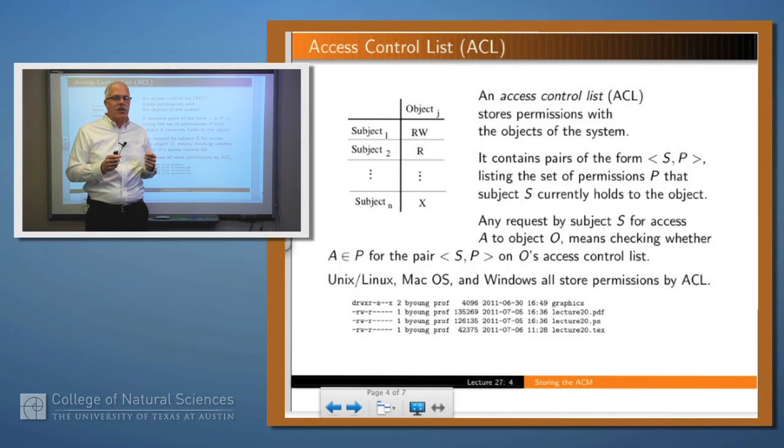The things in an access control list are pairs: subject name and a set of permissions. If a particular subject requests access to the object, you look in the access control list to see if associated with that subject is a set of permissions which contains the kind of access being requested. Here at the bottom of this slide, for example, is a representation of that for a few files in a Unix system. In this case, the owner has read and write access, my group has read access, and nobody else has any accesses. This is a convenient way to represent that information.